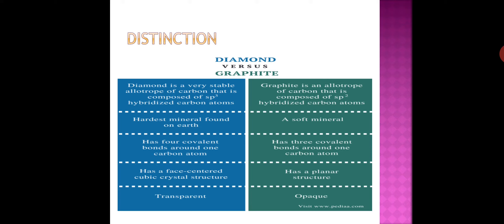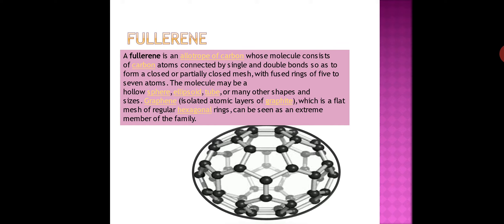Fullerene is an allotrope of carbon that is rarely found in nature; it is found in soot and interstellar space. The first example of fullerene is buckminsterfullerene C60. This form of carbon is named fullerene after the architect Richard Buckminster Fuller. C60, C70, C76, C82, and C86 are other examples of fullerene, and their molecules occur in small numbers in soot.